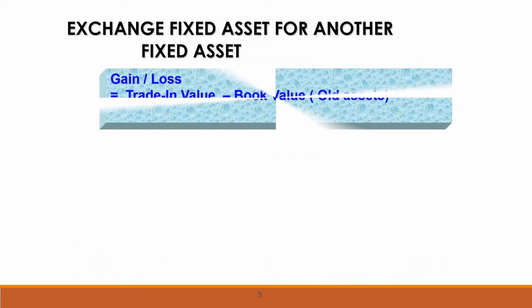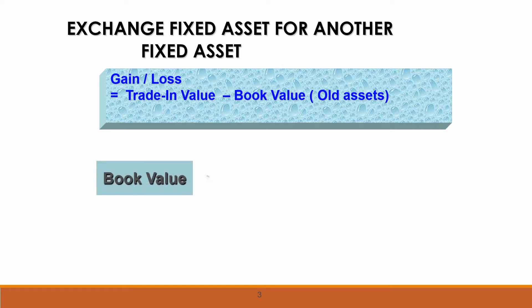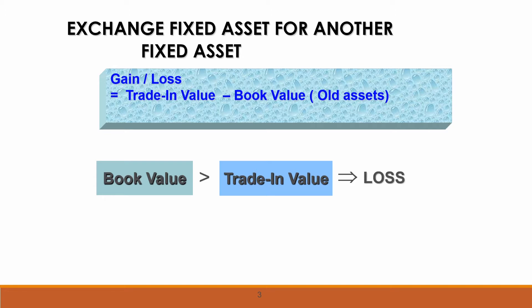When we want to exchange or trade-in a fixed asset for another fixed asset, we must calculate gain or loss. To calculate gain or loss, we must compare the trade-in value with the book value. When the book value of the old asset is bigger than the trade-in value, then we will get a loss on disposal.